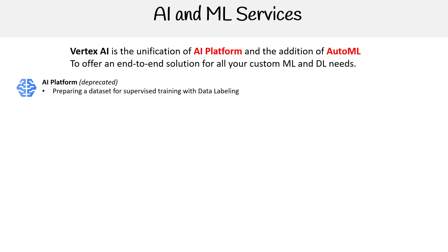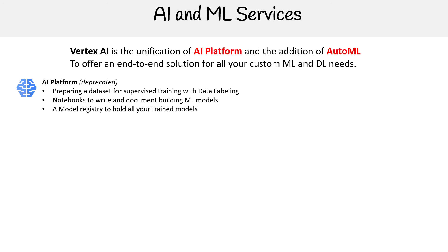With Vertex AI you would be able to prepare supervised training, training with data labeling, notebooks to write and document building ML models, a model registry to hold all your trained models, and pipelines for setting up automated CI/CD to rapidly deploy new changes — also known as MLOps.